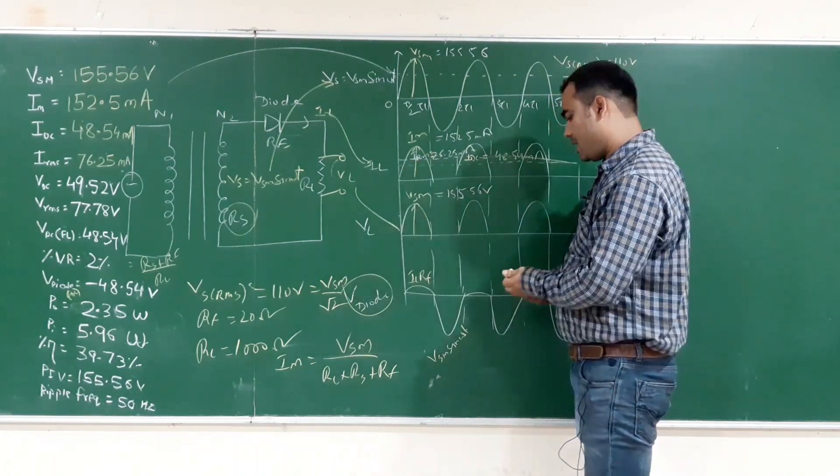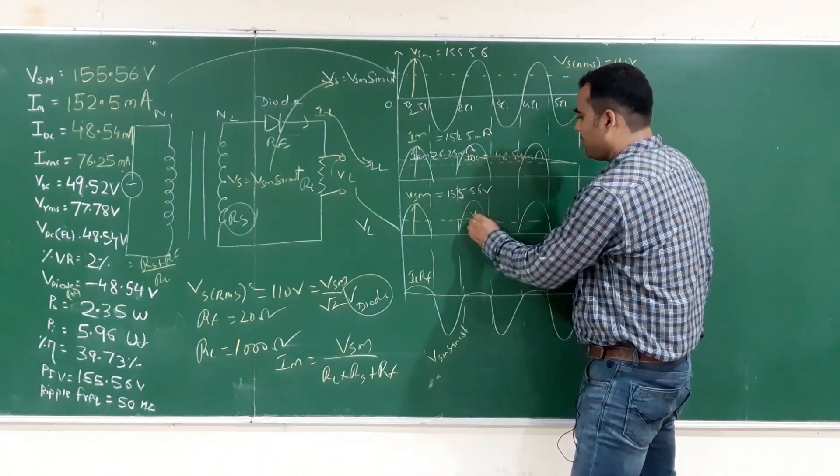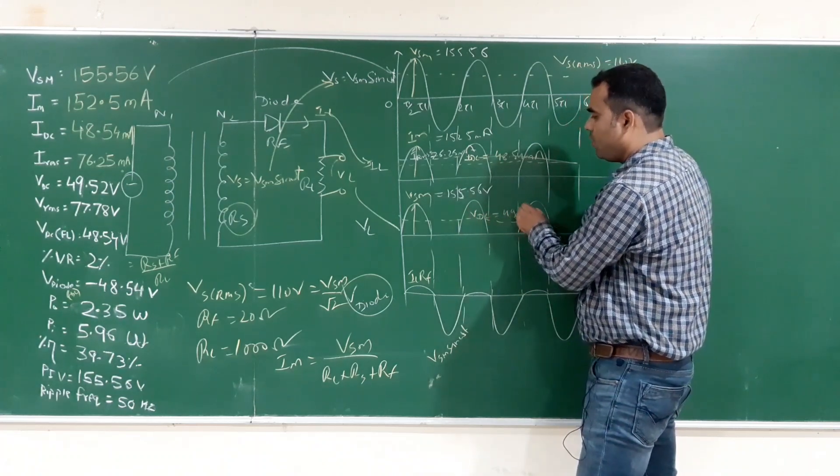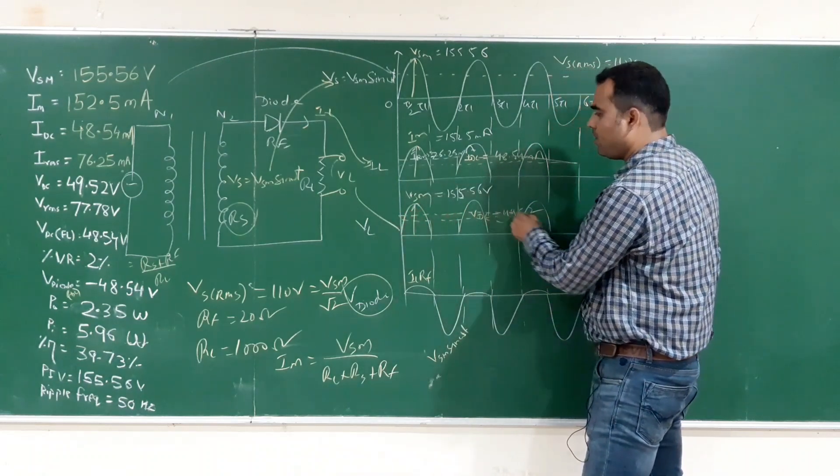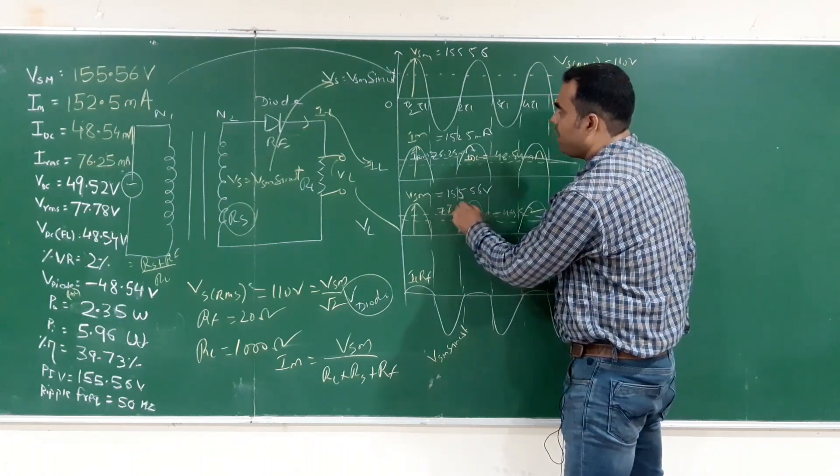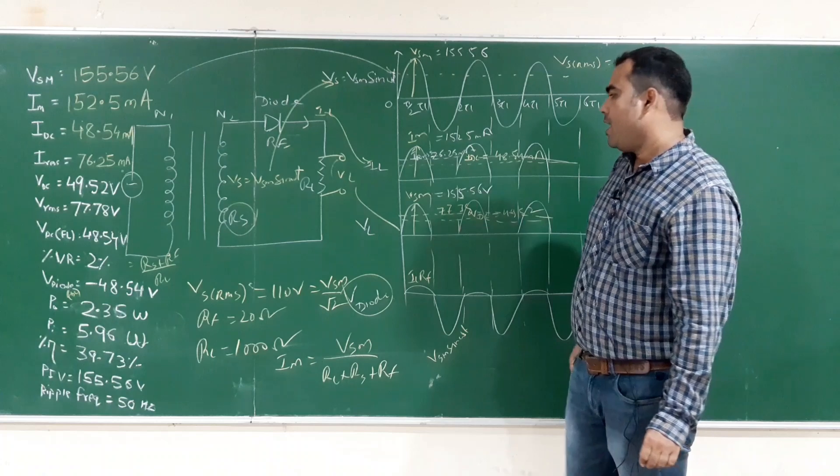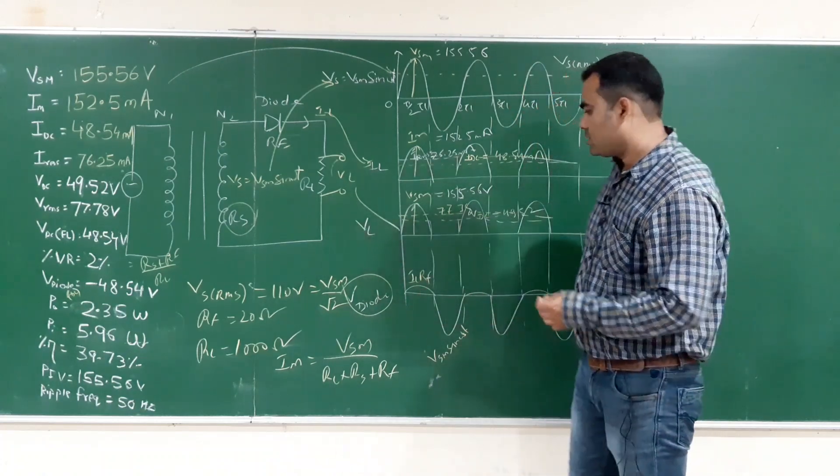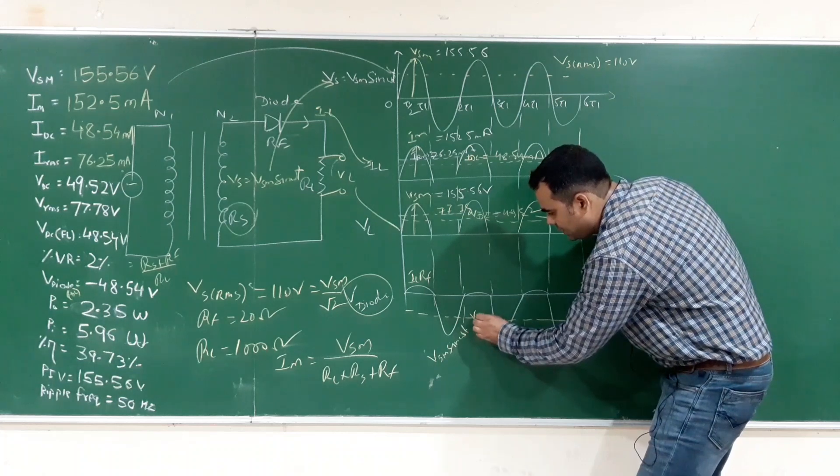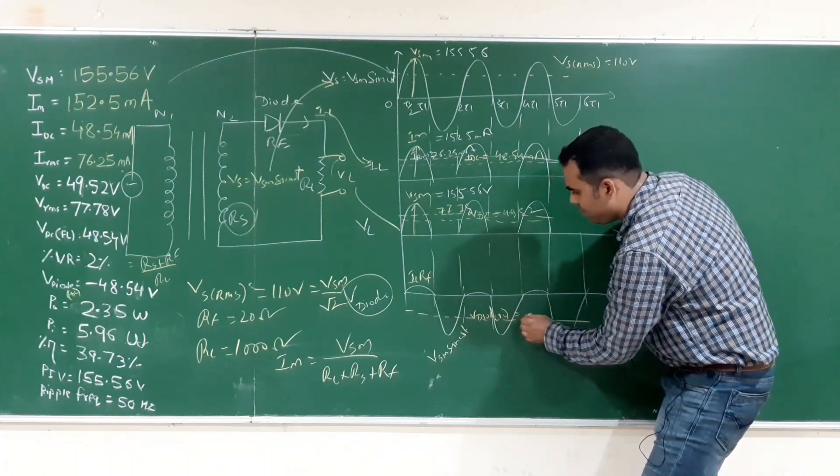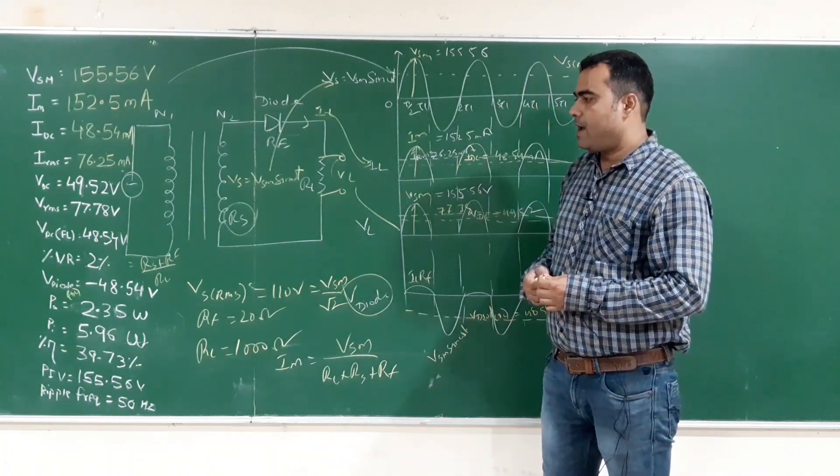Next VDC. The load voltage's average value we are calculating, VDC is 49.52 volt. Next VRMS, VSM by 2, you will get VRMS which is 77.78 volt. Next VDC full load is IDC into RL, percentage regulation 2%, V diode DC value is negative, which is negative 48.54 volt.